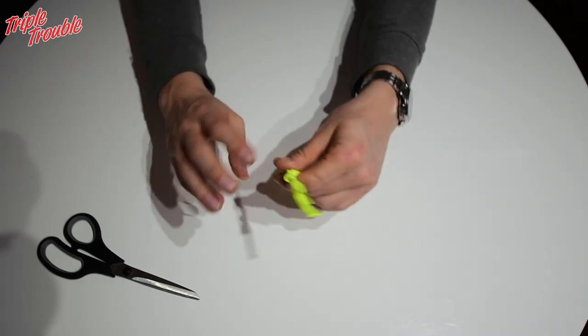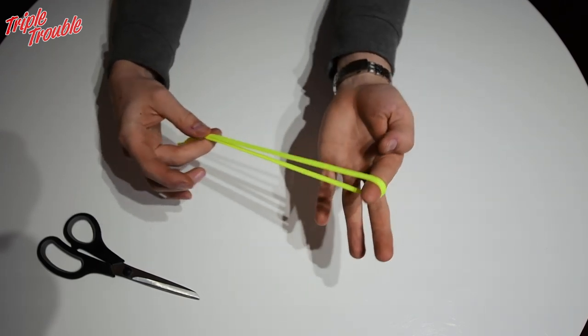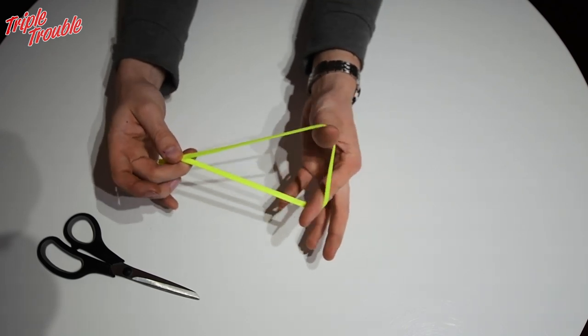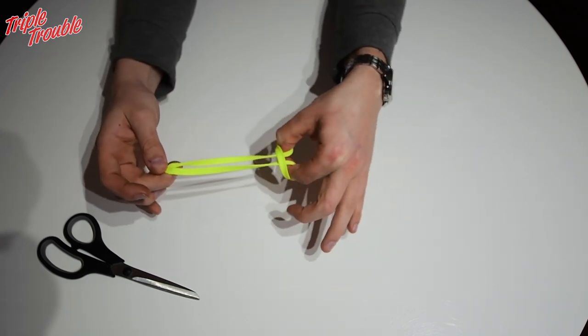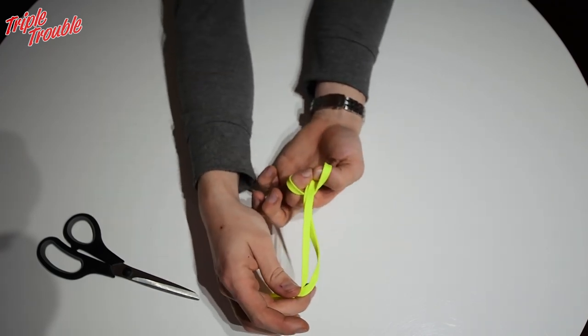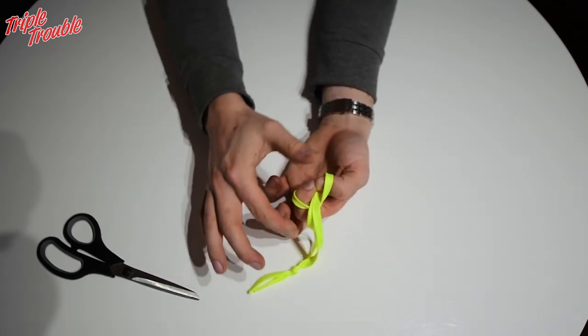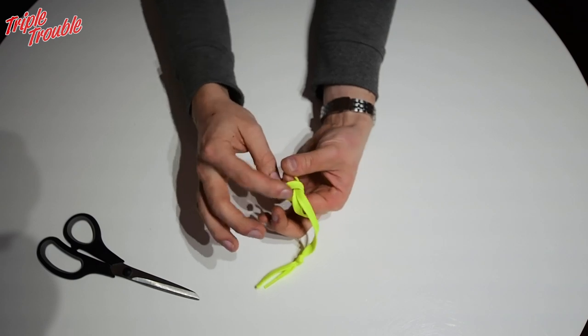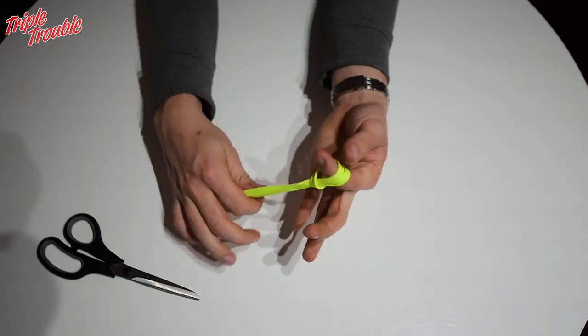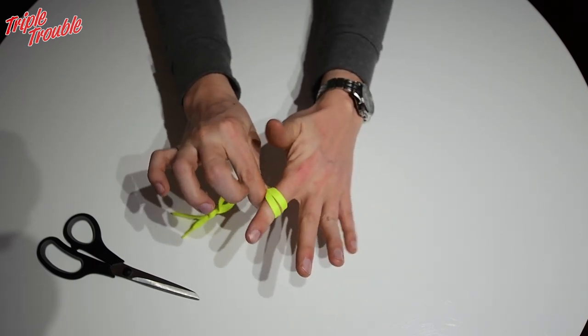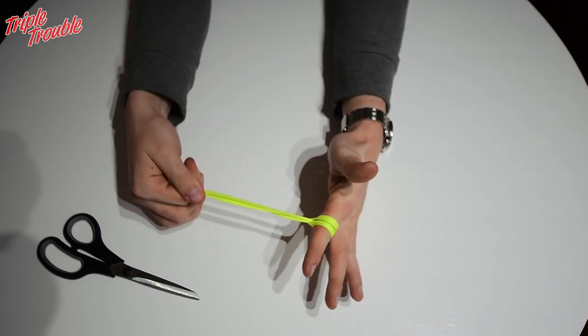I'll demonstrate it again in case you missed it. So index finger and thumb, turn your hand around, move your fingers towards each other. This will make a loop that tightens itself when you pull it.